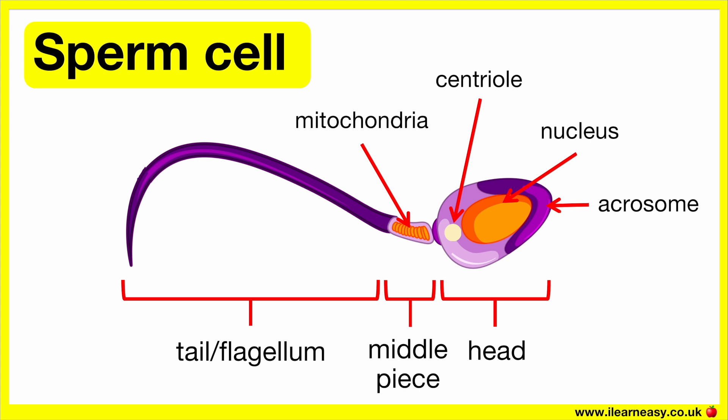In summary, sperm cells are adapted for reproduction by having a streamlined shape for movement, a tail for swimming, and an acrosome that contains enzymes to help penetrate the egg during fertilisation.